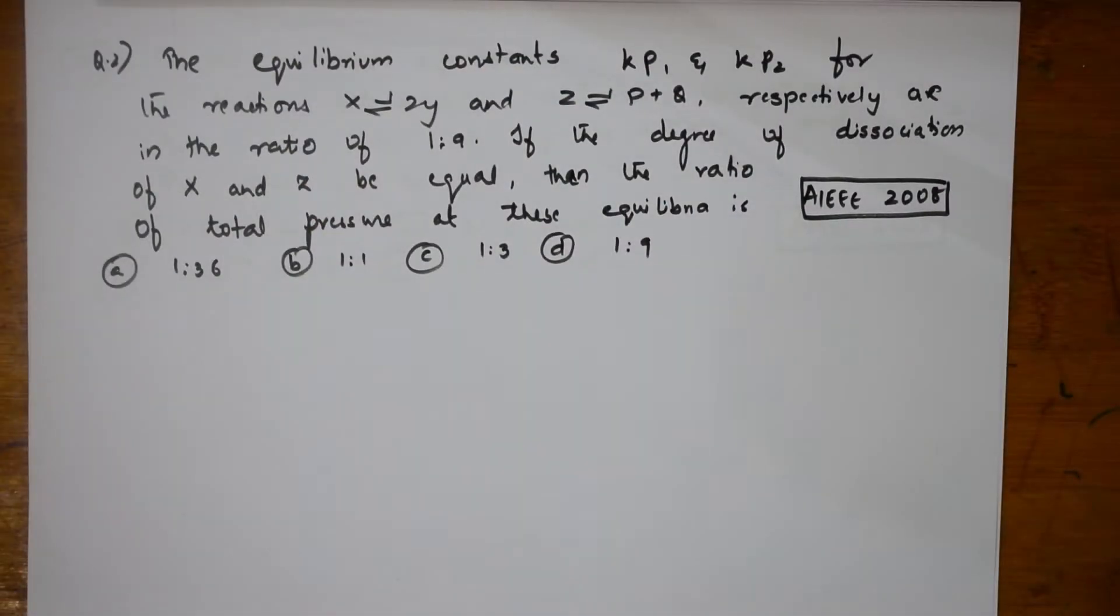Alright, let us see one more question which is based on equilibrium constants. Here what do they give us? The equilibrium constants Kp1 and Kp2 for the reactions, there are two reactions given.